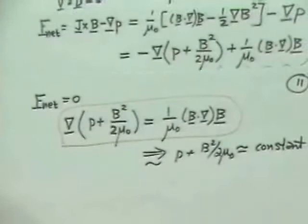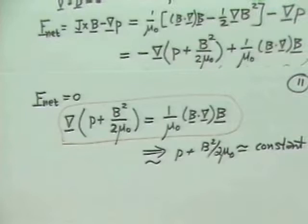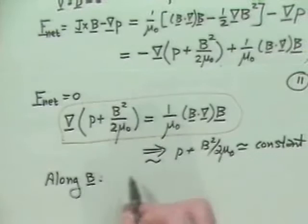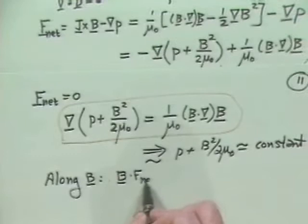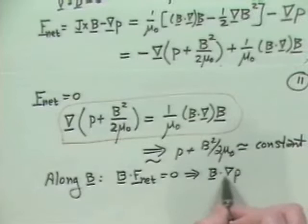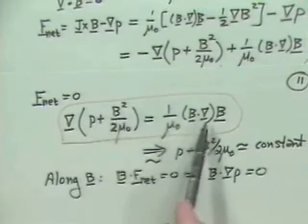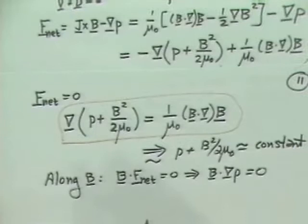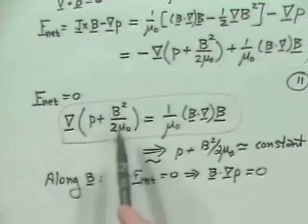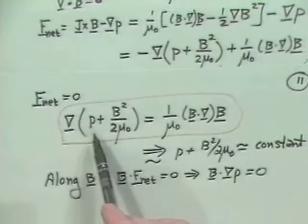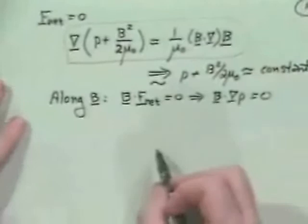Along B, you can also show that B dot the net force equals zero implies B dot grad P equals zero. That's because along the magnetic field, the magnetic field expansion force and tension force, because of the curvature, balance. The key parameter that indicates how strong is the magnetic field relative to the plasma is given by the ratio of their energy densities. So the key parameter is beta.